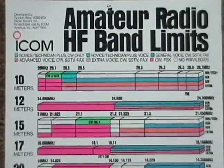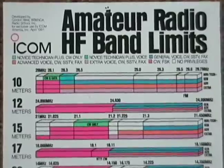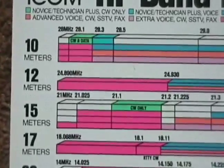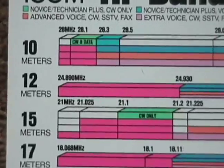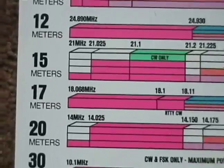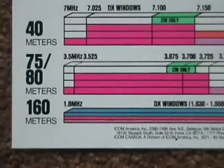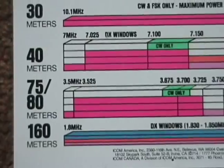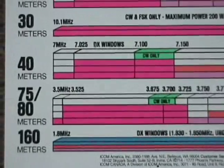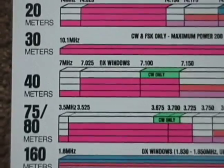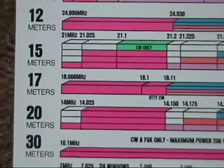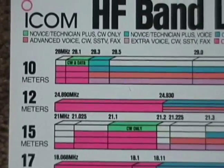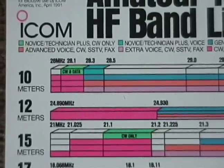These are the actual amateur radio bands in the high-frequency area. Over on the left-hand side here, this gives you the frequency range starting at the 10-meter band and going all the way up over to 160 meters, which is quite low in frequency — all the way down to the 1.8 MHz frequency range. So as you go higher in the meters, the frequency actually gets lower. That goes all the way up to 10 meters, which is the 28 MHz band for HF, or high-frequency operation.